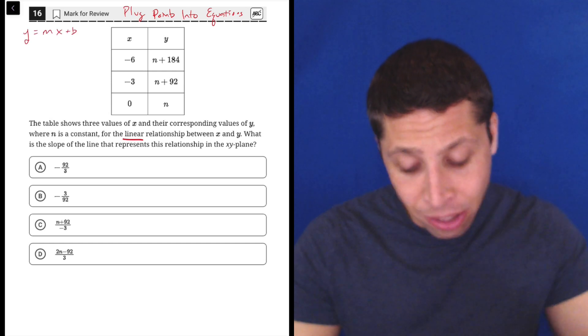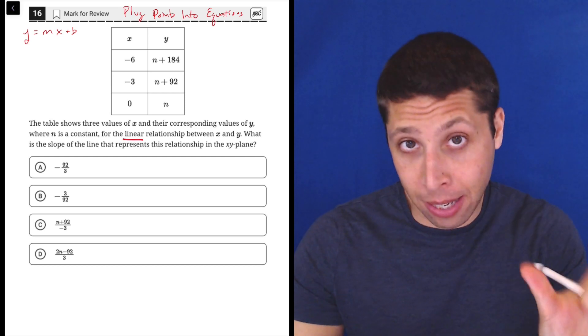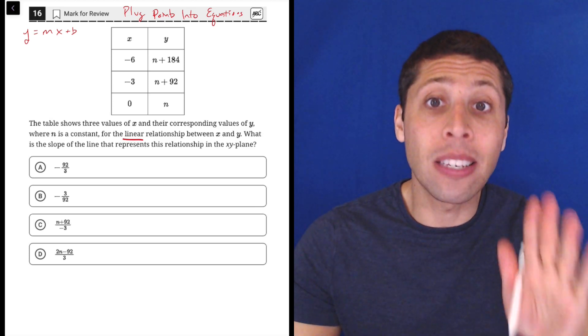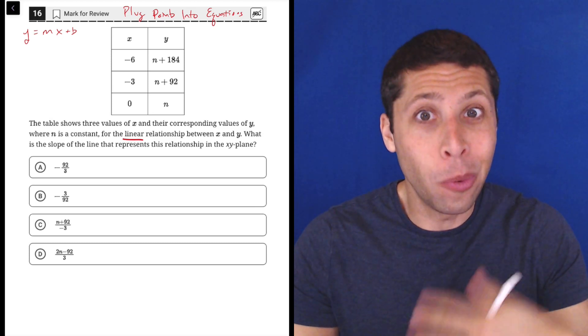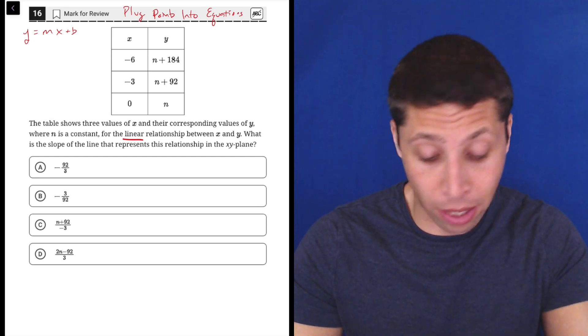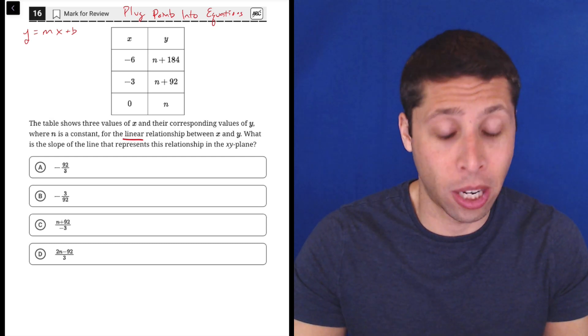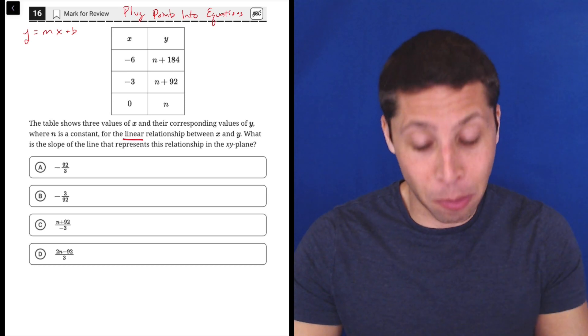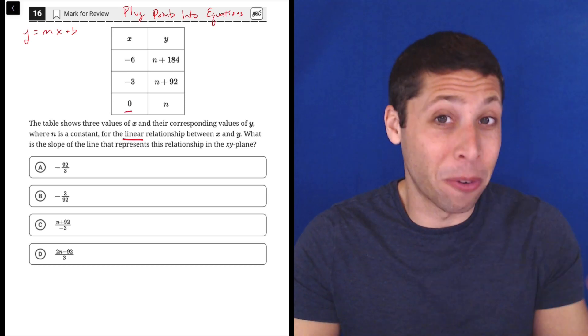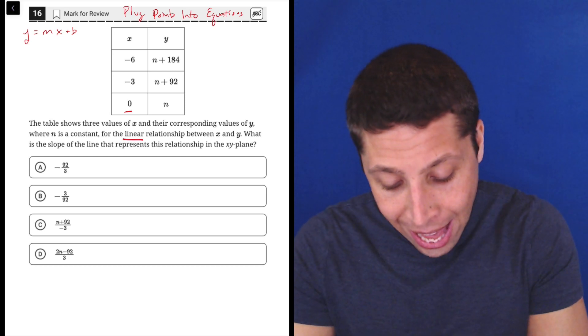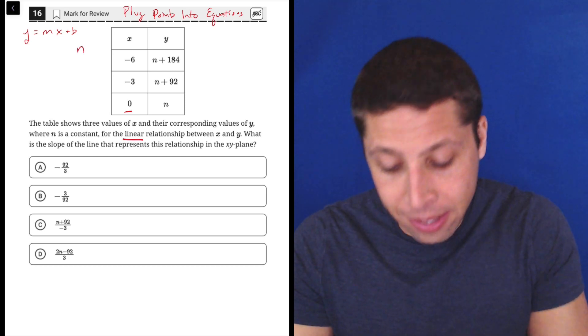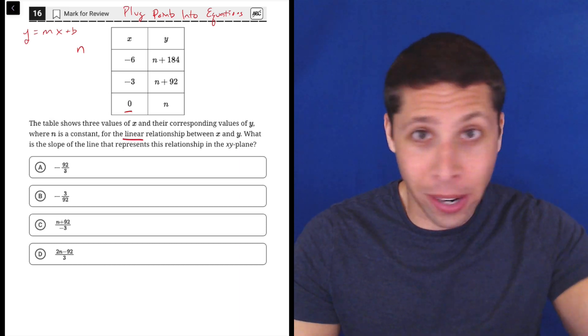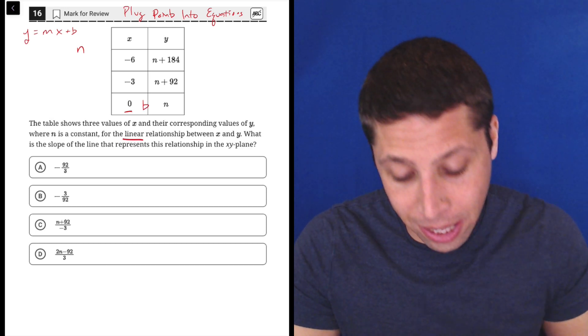Now we're being asked for the slope, so M is going to be our mystery, meaning that we should be able to plug in the Y, the X, and the B. Or at the very least, if we can do that, we can then solve for M. And we've got Ys and Xs. We've got three sets of them, so that part's checked off. The B is the Y-intercept. And remember, the Y-intercept is where X is equal to zero. So they were very nice here. They gave us that point. So I'm just going to put N for B because that's the Y-coordinate at the Y-intercept where X is equal to zero. So this is the B.